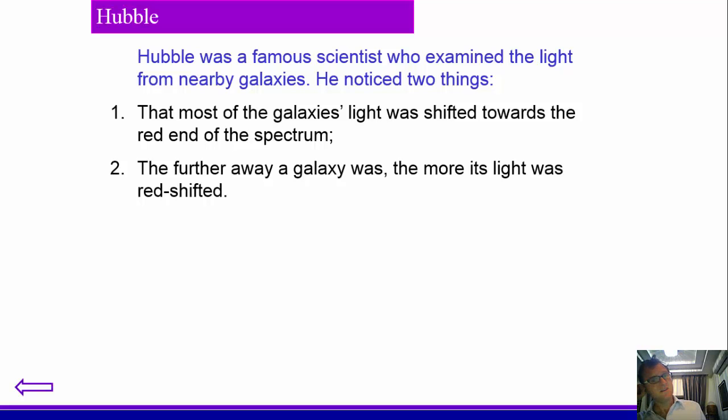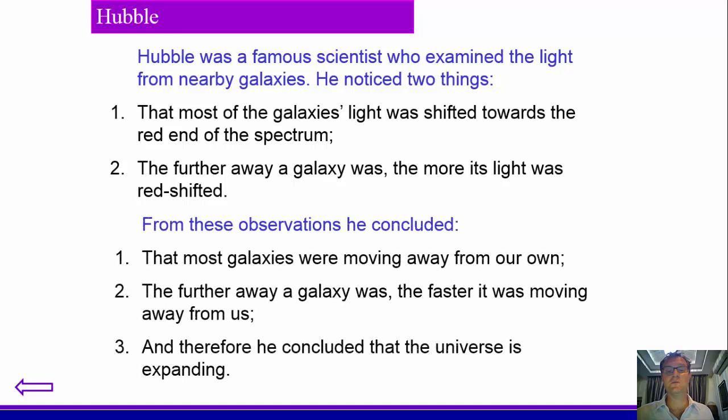So Hubble was famous for identifying that most galaxies' light was shifted towards the red end of the spectrum. Most, not all, because there can be some motion of galaxies, which means observations can be slightly different. But you also notice the further away a galaxy was, the more its light was redshifted. So from this, you could draw some conclusions.